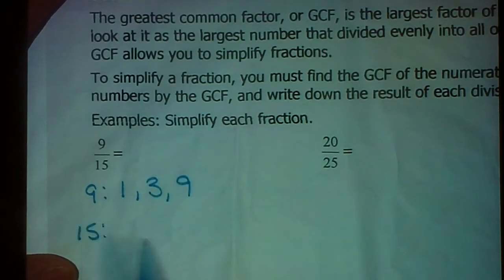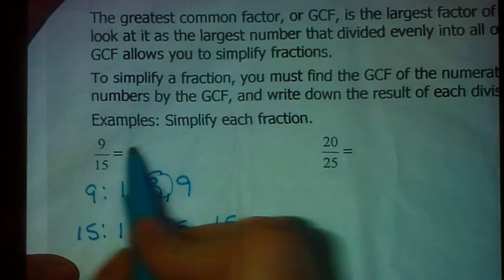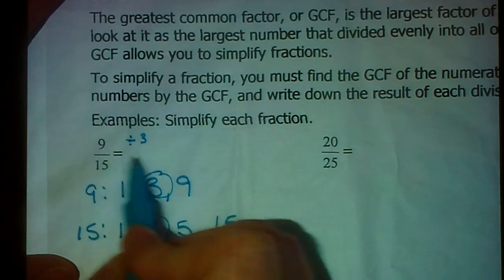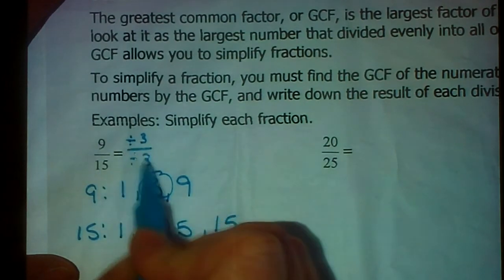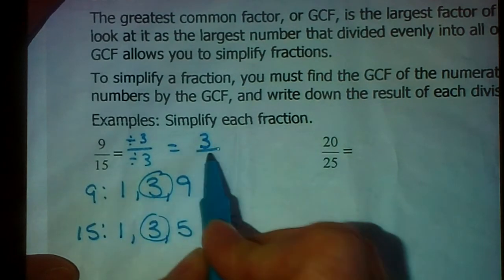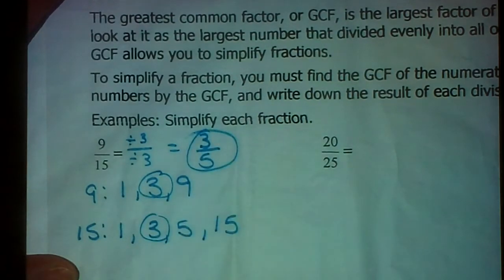What goes into 15? 1, 3, 5, 15. Find the biggest one they have in common. They both have a 3 in common, it's the biggest one. So we're going to divide both parts of this fraction by 3. 9 divided by 3 is 3. 15 divided by 3 is 5. So 3 fifths is that fraction reduced.